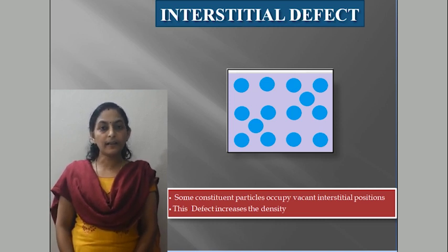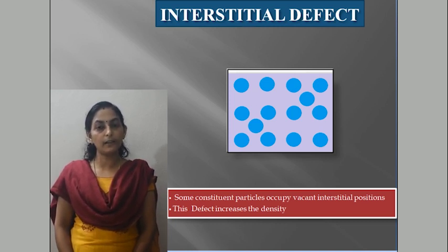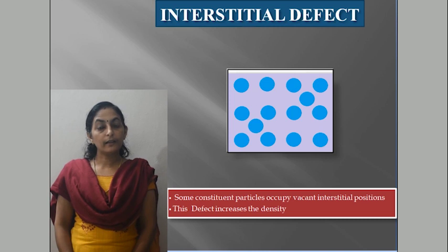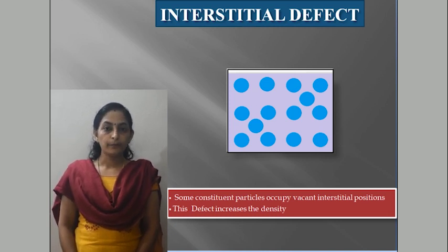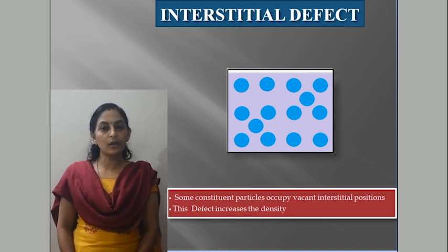When a particle occupies an interstitial space, we call it an interstitial defect. Interstitial defects increase the density of the crystal because extra particles are present. When a particle is missing from its site, that is a vacancy defect. These defects apply to non-ionic solids.